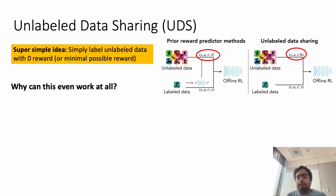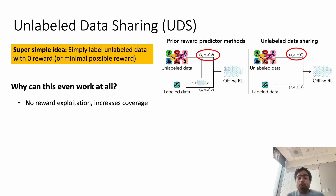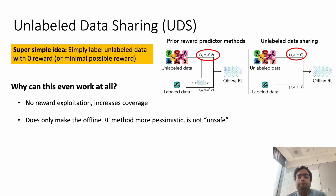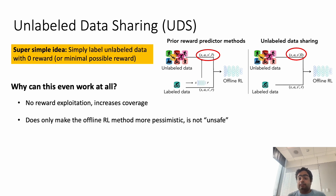Why can this simple strategy work in the first place? The main reason is that it alleviates the chances of any form of reward exploitation, which can lead to quite bad performance for offline RL methods. At the same time, it increases coverage and allows us to train on a lot more data by leveraging the unlabeled dataset. Since offline RL algorithms are already pessimistic or conservative in some way, and UDS is only making them slightly more conservative, it shouldn't be as bad — in offline RL, being conservative is a good thing.